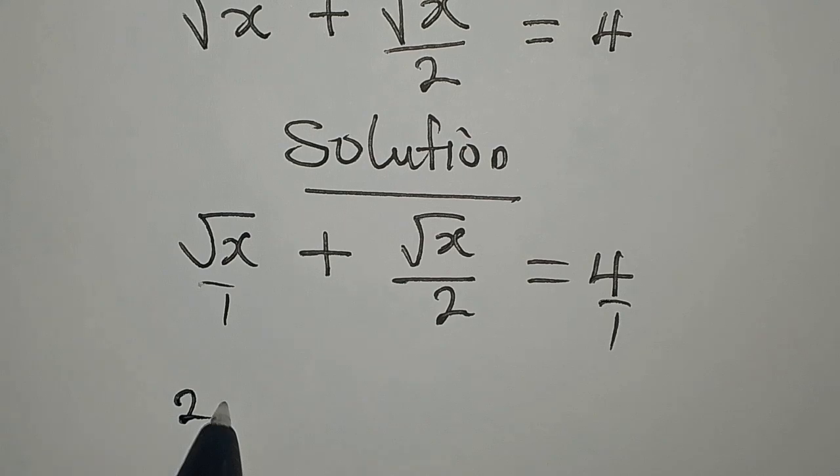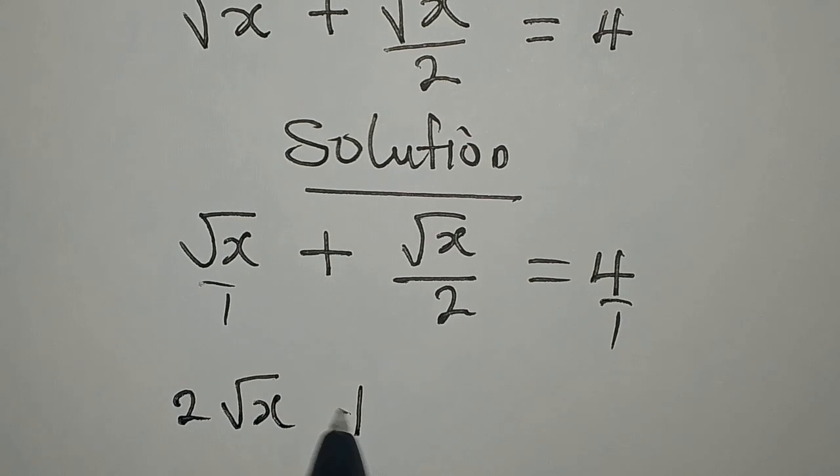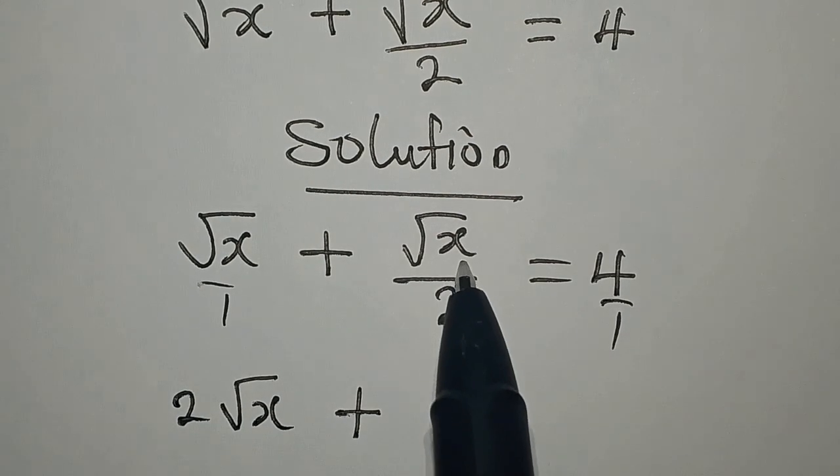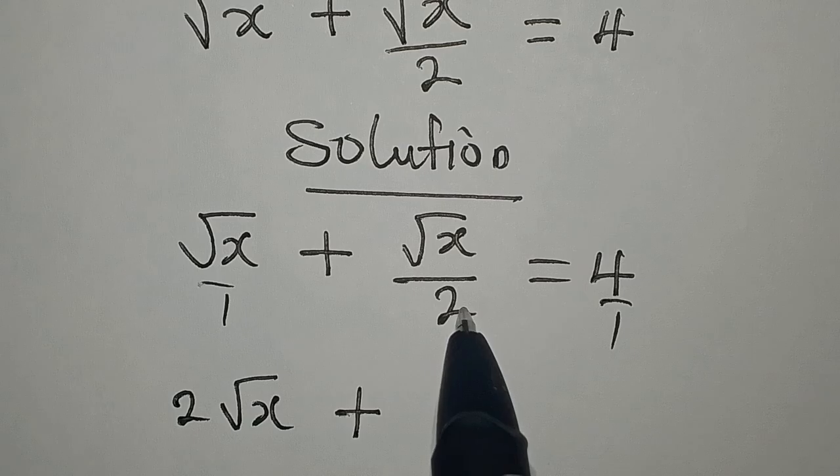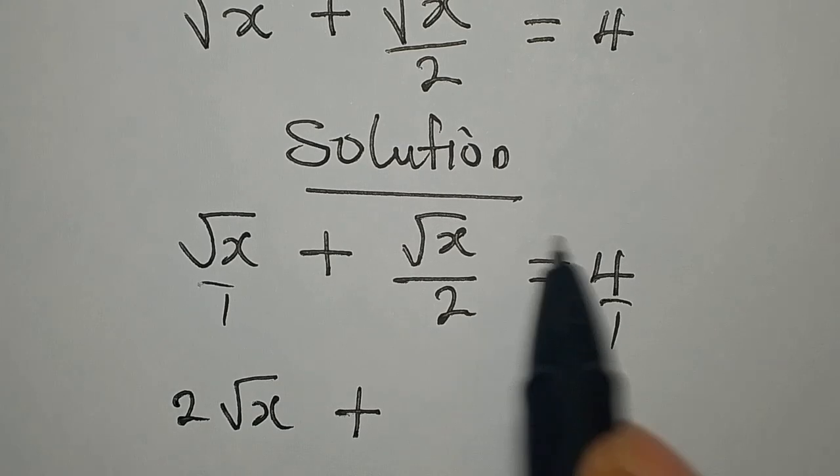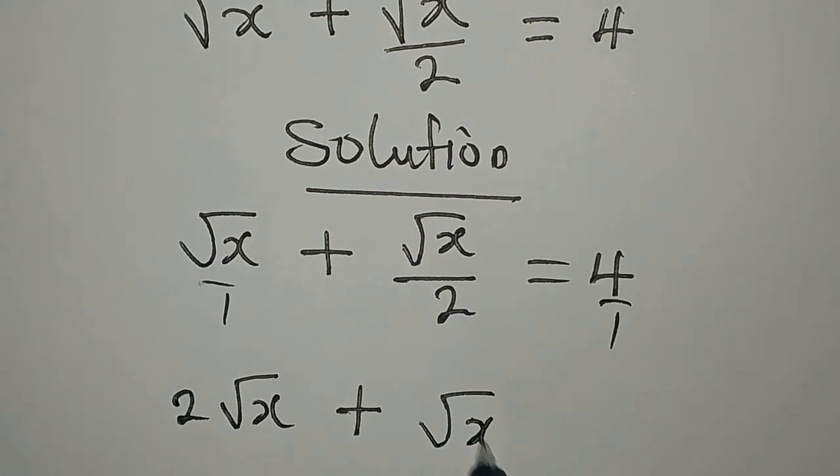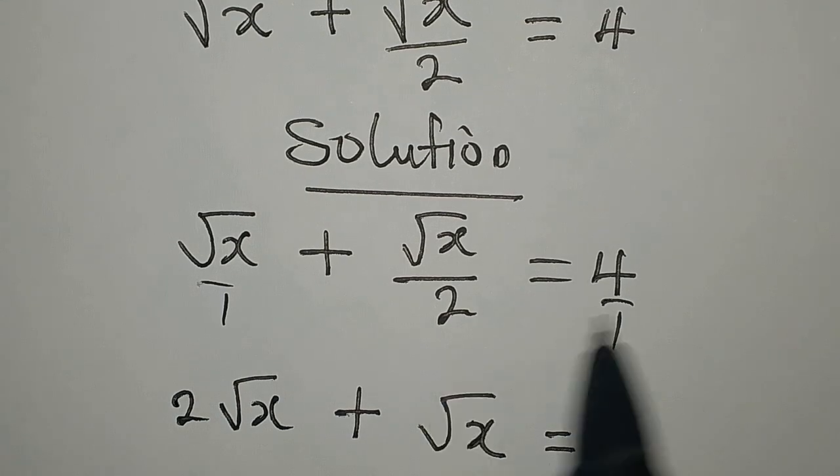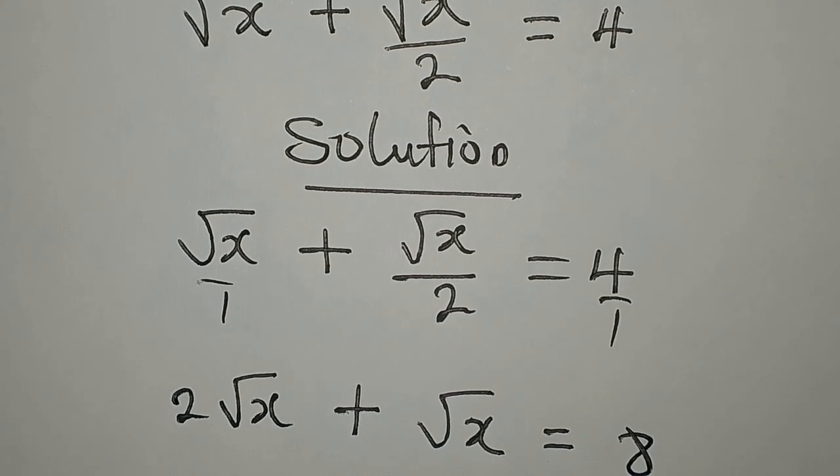Multiplying all through by the LCM, we'll have 2√x plus √x, and that'll be equal to 2 times 4, that will be 8.